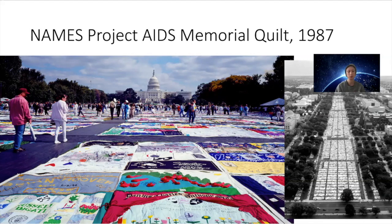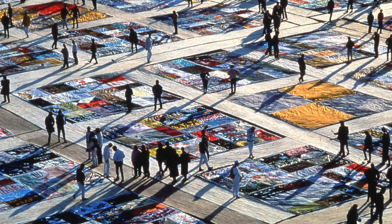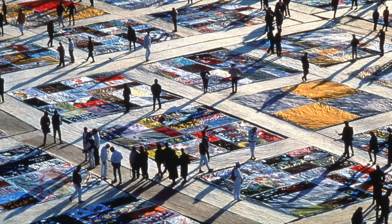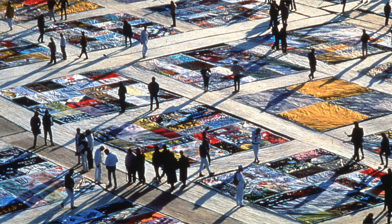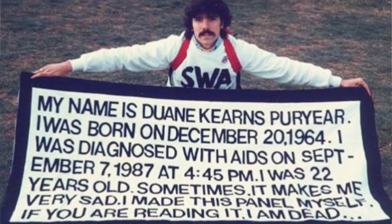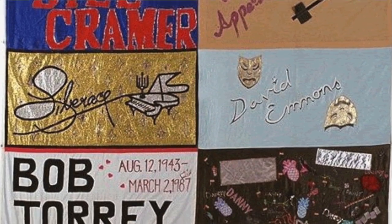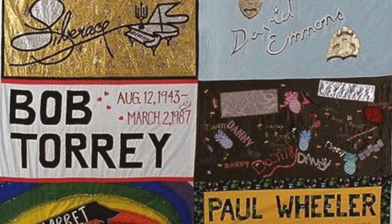The AIDS Memorial Quilt is probably the most significant and large-scale public art piece about the crisis, and one that really helped bring attention to it — it was hard to ignore. It was composed of more than 50,000 individual three-by-six-foot memorial panels commemorating more than 105,000 individual lives of people who died of AIDS, sewn together by friends, lovers, and family members.